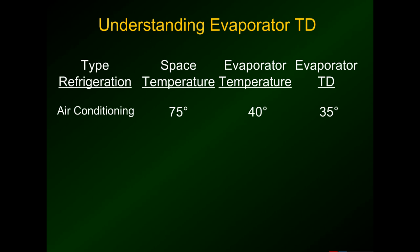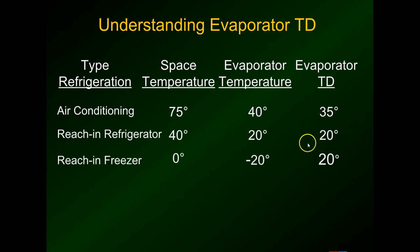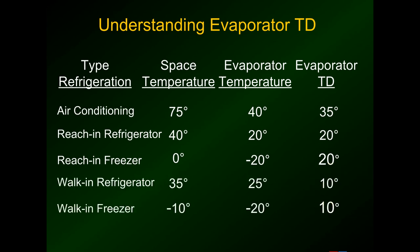Let's take a look at some different TDs for different equipment. Starting with air conditioning: with air entering the evaporator at 75 degrees and the evaporator temperature at 40 degrees, the TD is 35 degrees — quite a bit different from the Delta T, which is normally around 20. Reach-ins have a TD of 20 degrees and walk-ins a TD of 10. These are good rules of thumb — most manufacturers design their equipment to have TDs in these ranges, so if you're close, things are likely working somewhat normally.